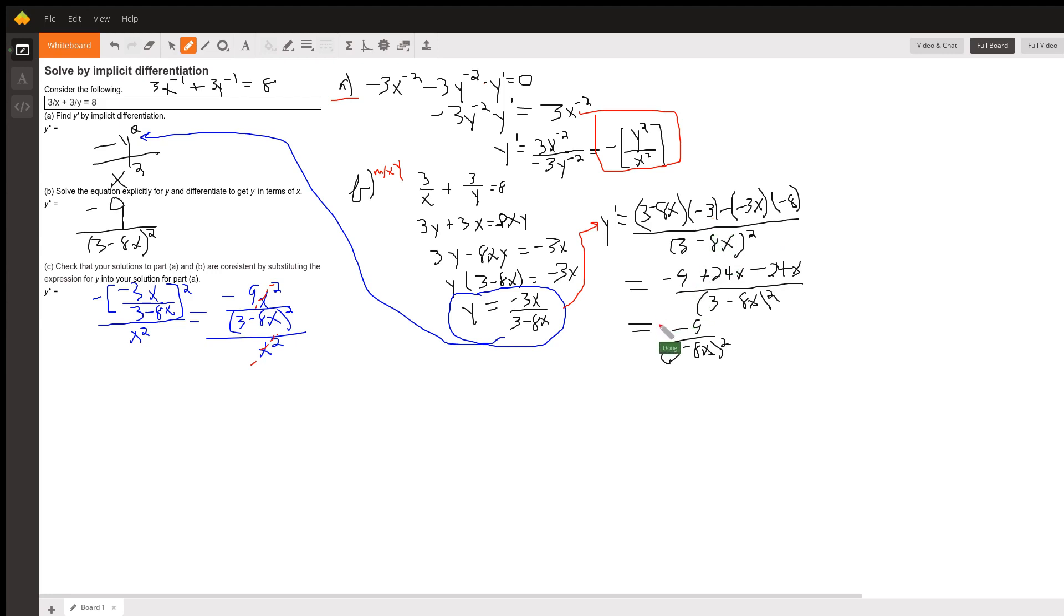So there's y prime in terms of x. So there's your two answers there. Now what are they asking you to do? They're asking you to take this minus 3x over 3 minus 8x, plug it in for y in that part a. And that's what I've done here.